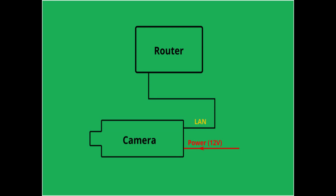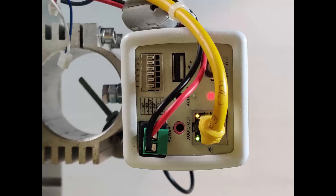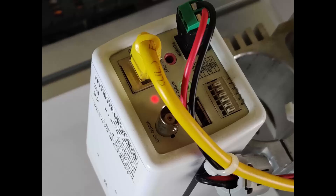In order to set the camera up, you can use the following diagram. You connect the 12V power supply and the ethernet cable as shown in this photo and the side photo in the next picture.